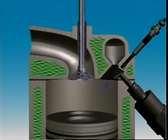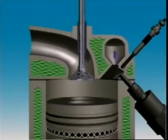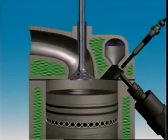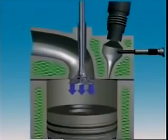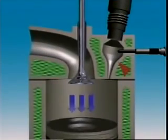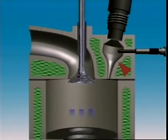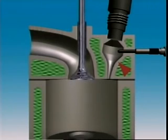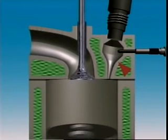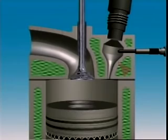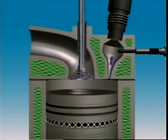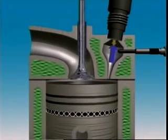This helps make combustion more efficient. This pre-combustion chamber is screwed into the cylinder head, and the injector is mounted in the upper end. Injection occurs near the top of the compression stroke. Only part of the fuel is burned in the pre-combustion chamber because of the limited amount of air there.